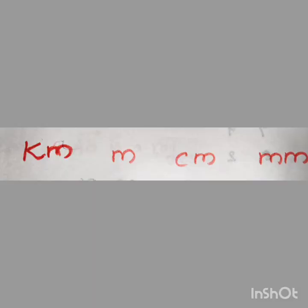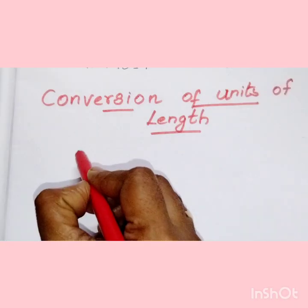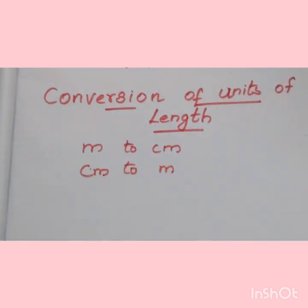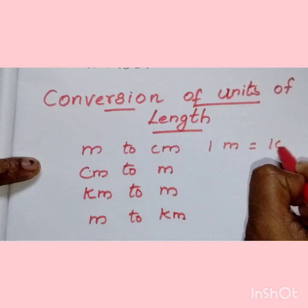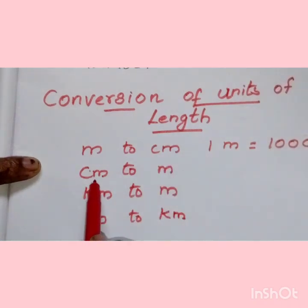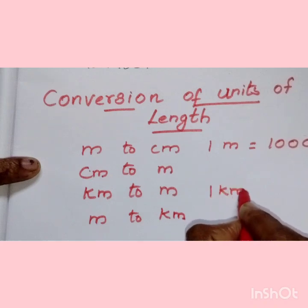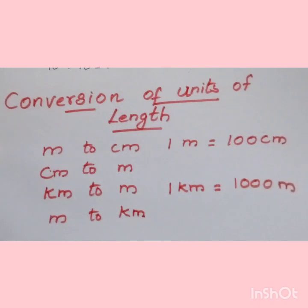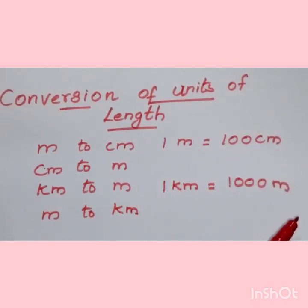Now let us see some units of length: they are kilometer, meter, centimeter, and millimeter. I have written them in highest to lowest order. We are going to learn how to convert meter to centimeter, centimeter to meter, kilometer to meter, and meter to kilometer. We already know that one meter is equal to 100 centimeters, and one kilometer is equal to 1000 meters. Using these two facts we will learn how to do all four conversions.